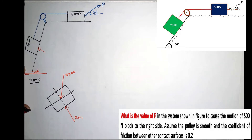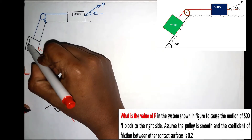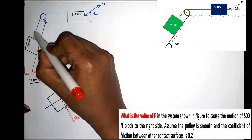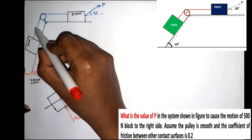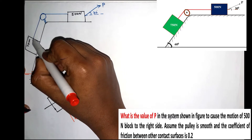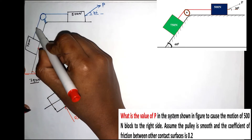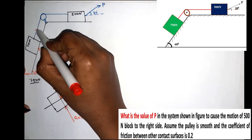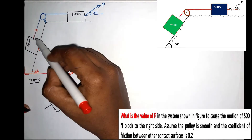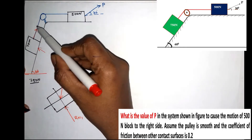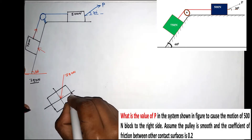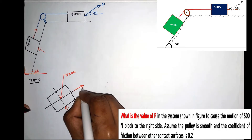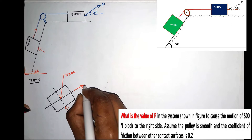The external force acting on the block is the tension in the string. The block is connected to the string, and this creates a tensile force acting on the body. We mark this tensile force as T.